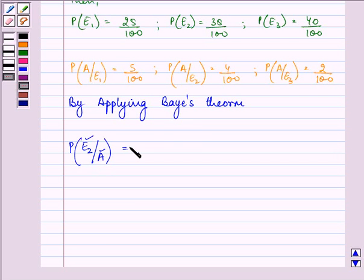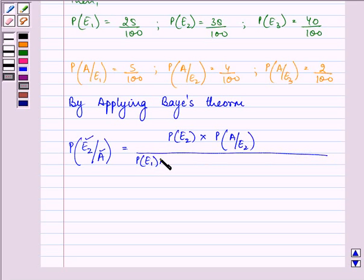So it is equal to P(E2) times P(A upon E2) divided by P(E1) times P(A upon E1) plus P(E2) times P(A upon E2) plus P(E3) times P(A upon E3).